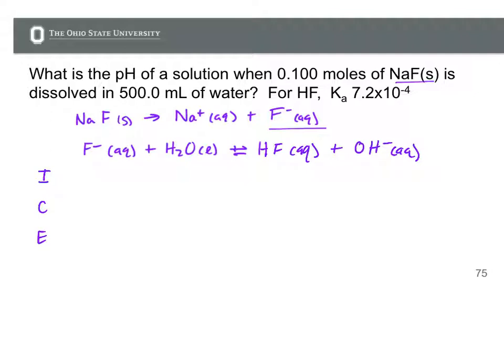Remember that in our ICE table we use concentrations. We're given the moles of sodium fluoride. We know that for every one sodium fluoride we end up with one fluoride ion, and we have 500 mL of water that's dissolved in. So we're gonna have 0.1 moles of fluoride ion in 0.5 liters. That's gonna end up being 0.2 moles per liter. We can ignore water. We don't have any HF in solution initially nor do we have any OH minus initially.